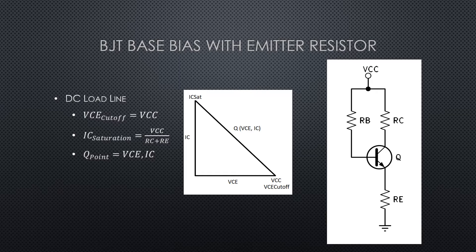In saturation, the transistor is acting like a short or closed switch, and we've got maximum current at this time. When the transistor is acting like a short, the only resistance we have is RC and RE. We can find that saturation current by dividing VCC by RC plus RE.